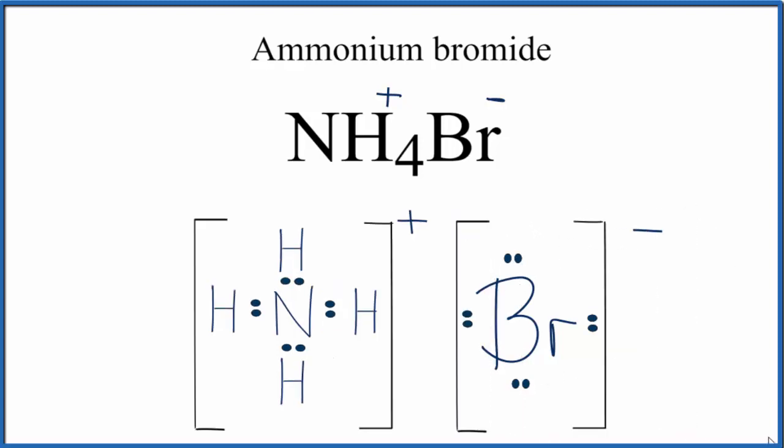And that's the Lewis structure for NH4Br. You can see we have this plus here because the ammonium lost an electron, so it only has these 8 electrons, giving the octet to the nitrogen. And then the bromine gained 1. It originally had 7, now it has 8, so it has an octet.